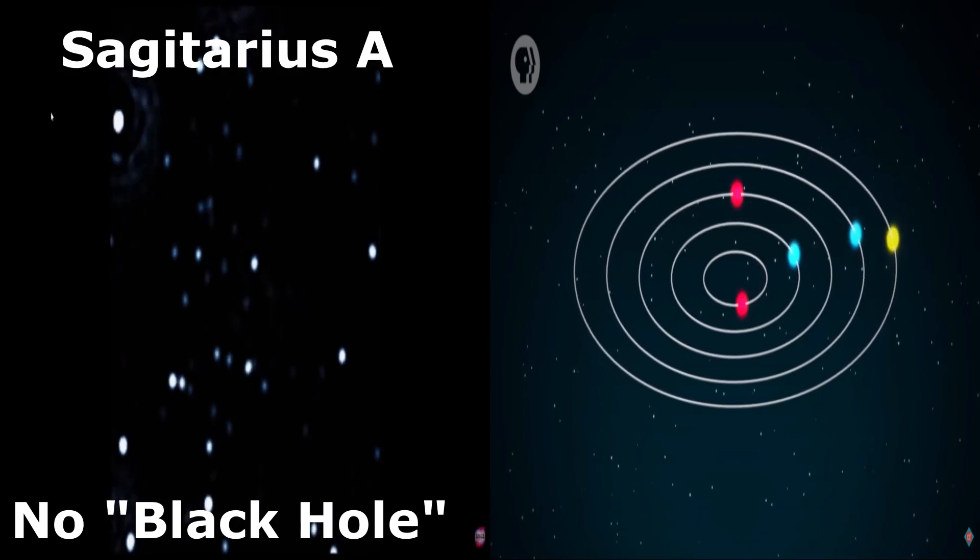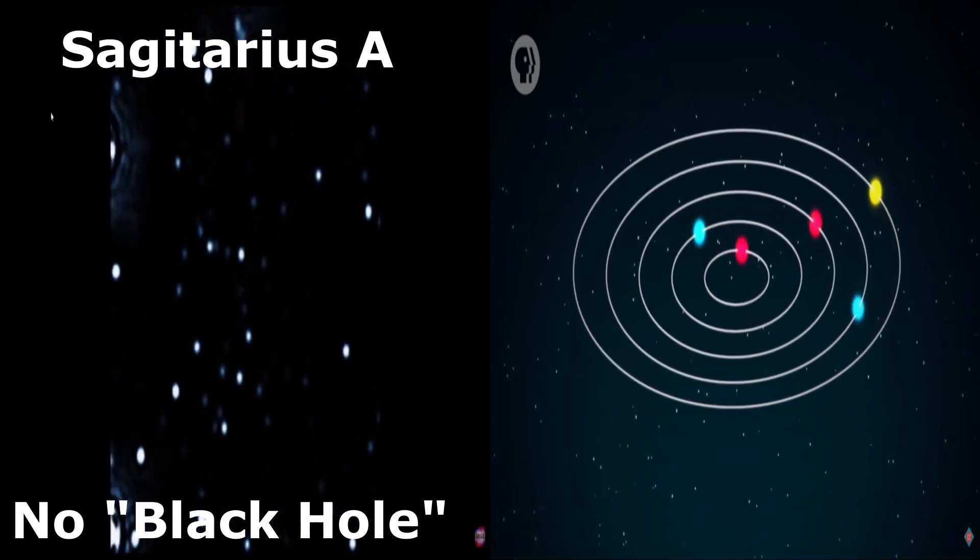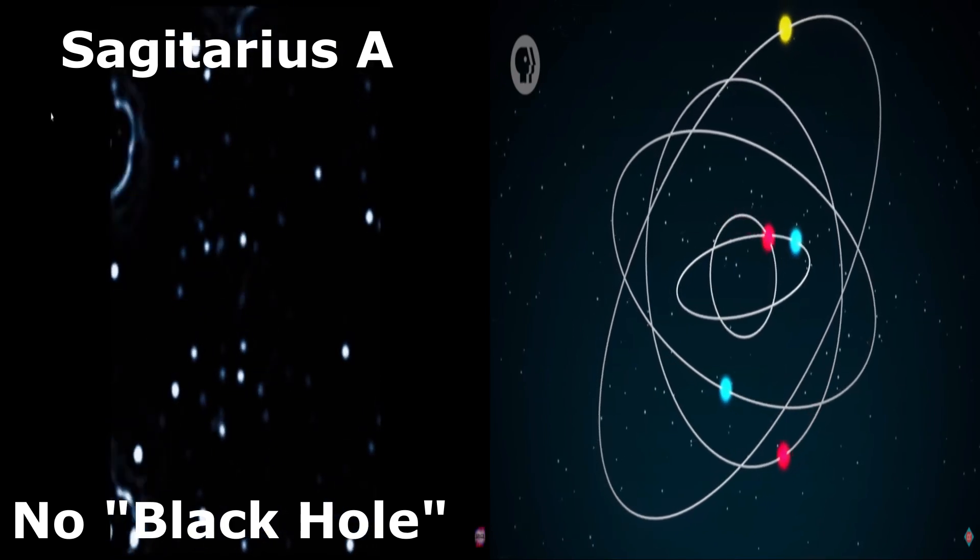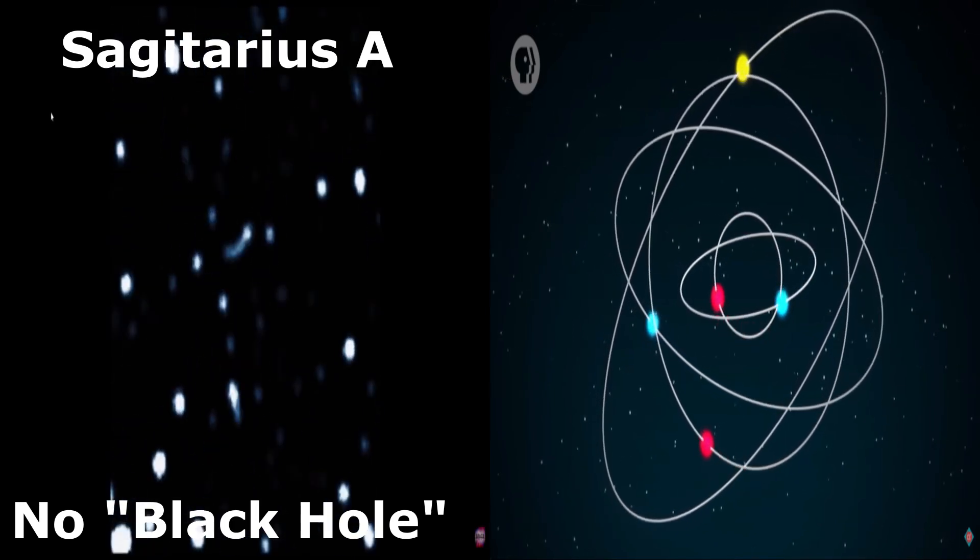Not only that, but the stars don't all orbit in a flat plane like our planets do. Instead, their orbits are tilted in all different directions, more like the way long-period comets are scattered around the Sun.